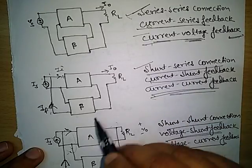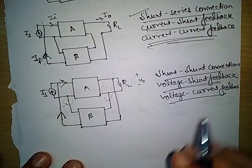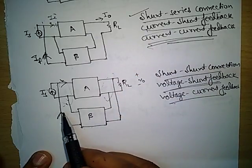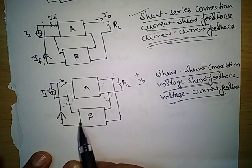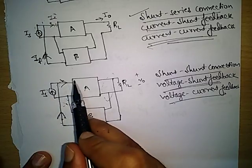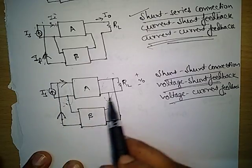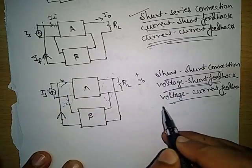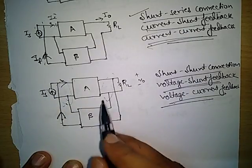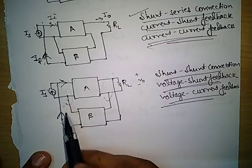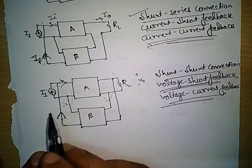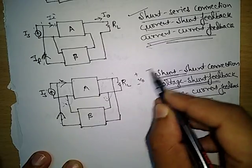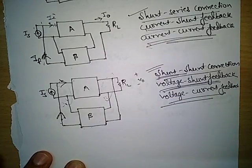The last type: voltage taken from output and current is added to make the input current — this is voltage-current feedback. Another name: voltage taken from output and connected in parallel, so voltage-shunt feedback. The connection is shunt at input and shunt at output — shunt-shunt connection. These are the nomenclatures of all four types of feedback amplifiers.